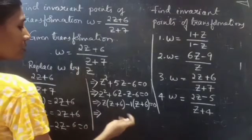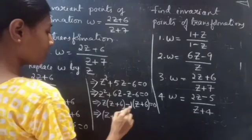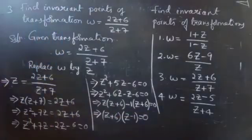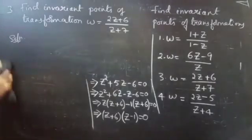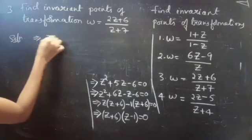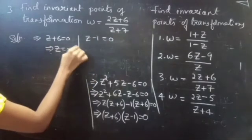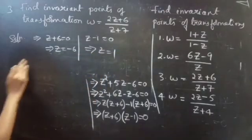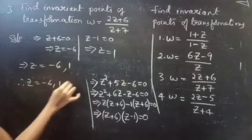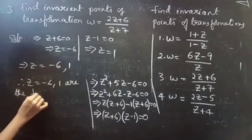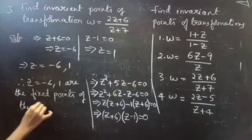You have z plus 6 in both terms, so take it common. You will get z plus 6 into z minus 1 equals to 0. From this you will get z plus 6 equals to 0, giving z equals to minus 6, and z minus 1 equals to 0, giving z equals to 1. Therefore z equals to minus 6, 1 are the fixed points of the given transformation.